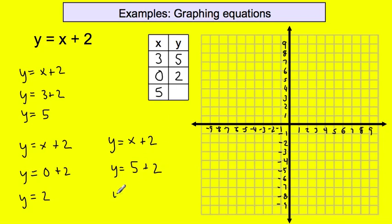So y equals 7. When x is 5, y equals 7. Now I put these three points on the graph. First ordered pair: (3, 5) — moving over to 3 on the x axis: 1, 2, 3 — then up to 5 on the y: 1, 2, 3, 4, 5 — and I put my dot right there. Notice how it's right on the intersection of the grid lines, not off to the side or in the middle of a space.